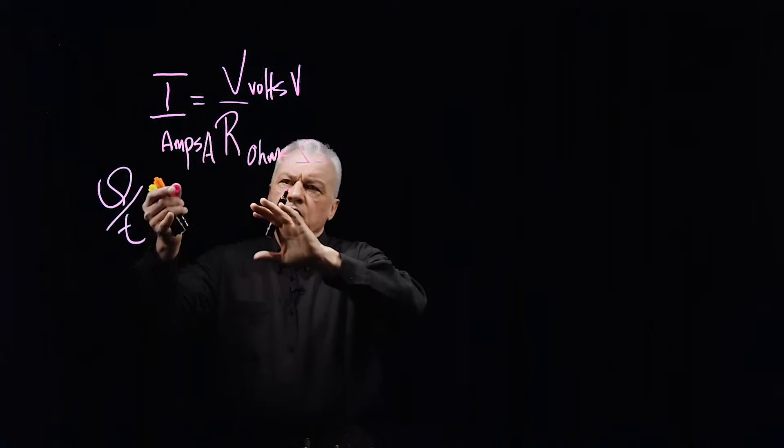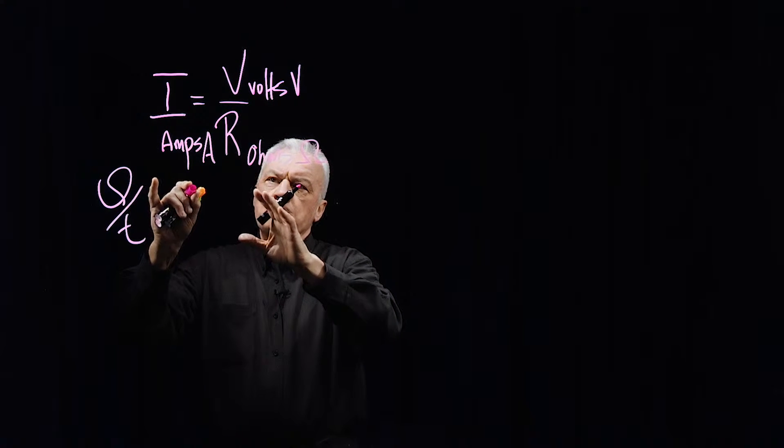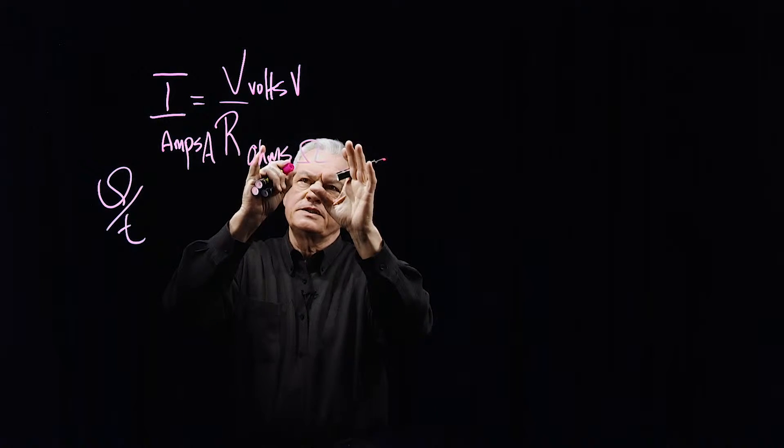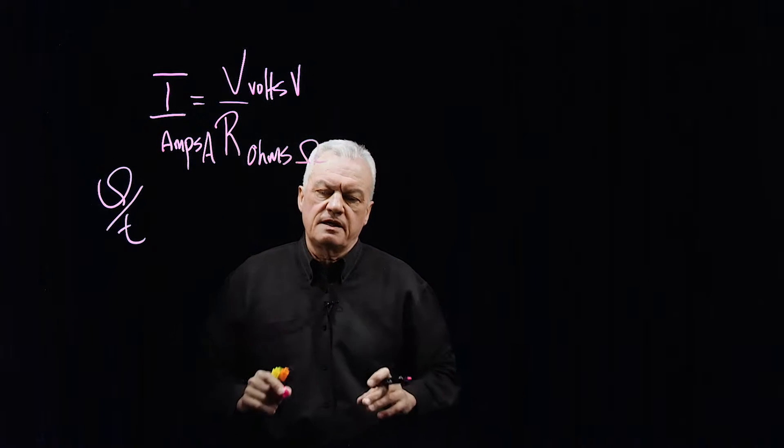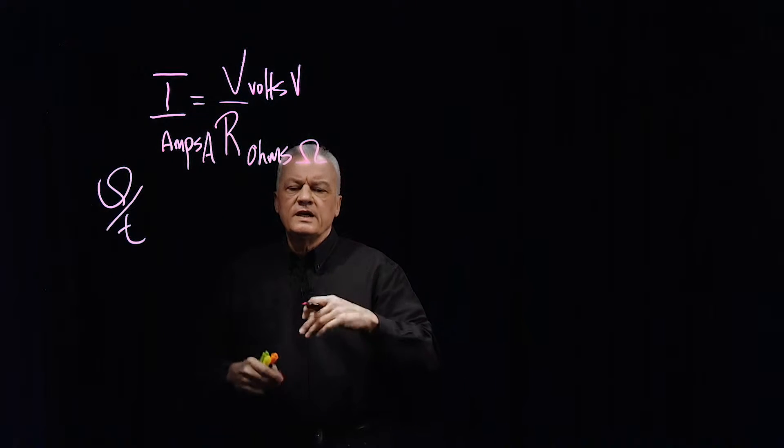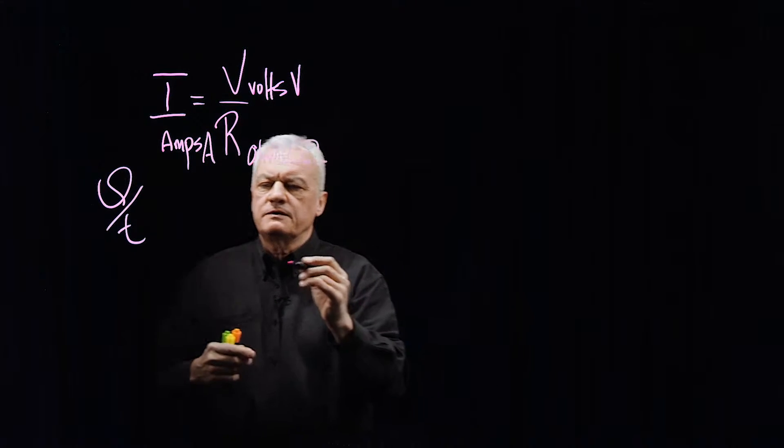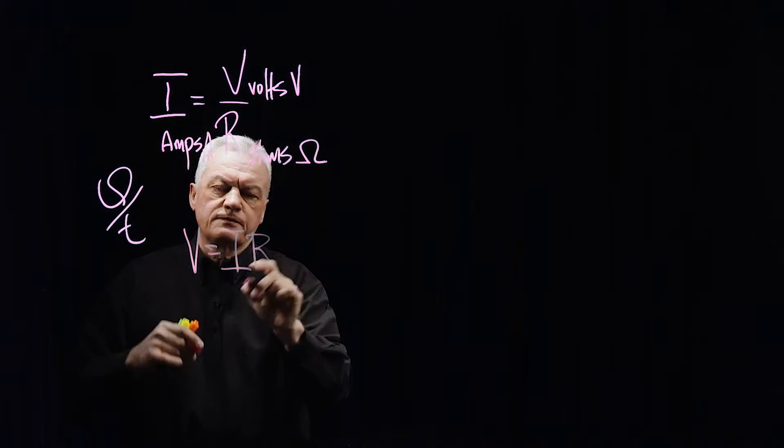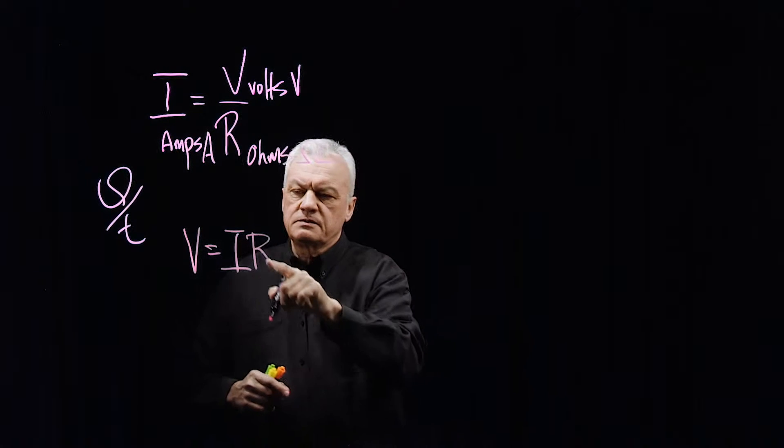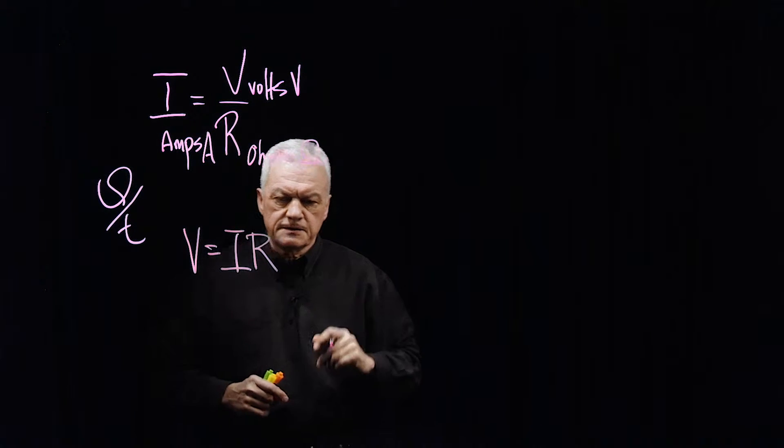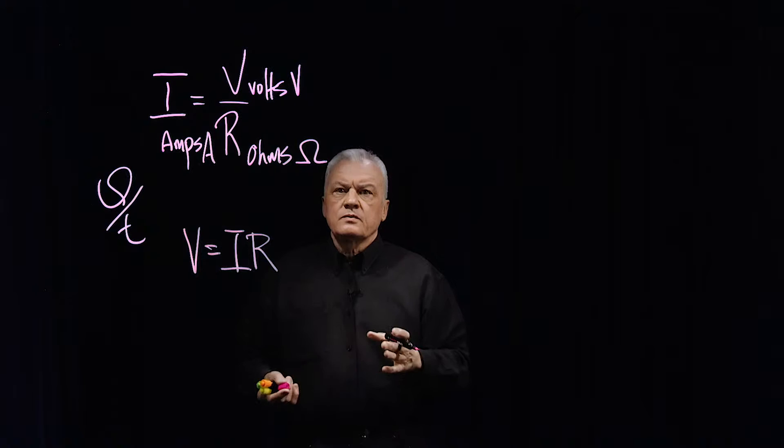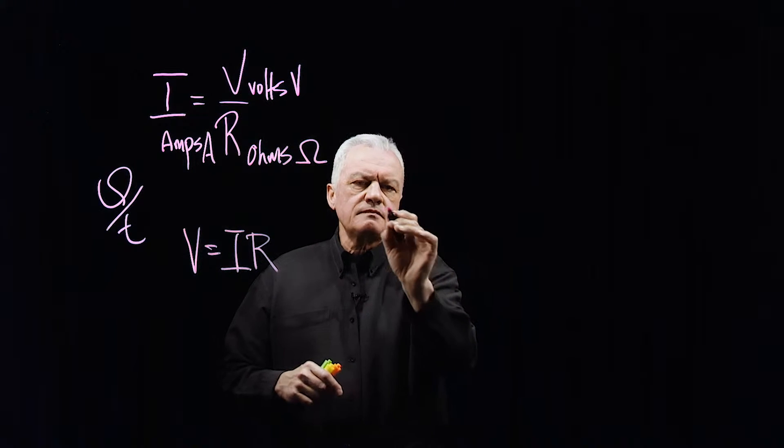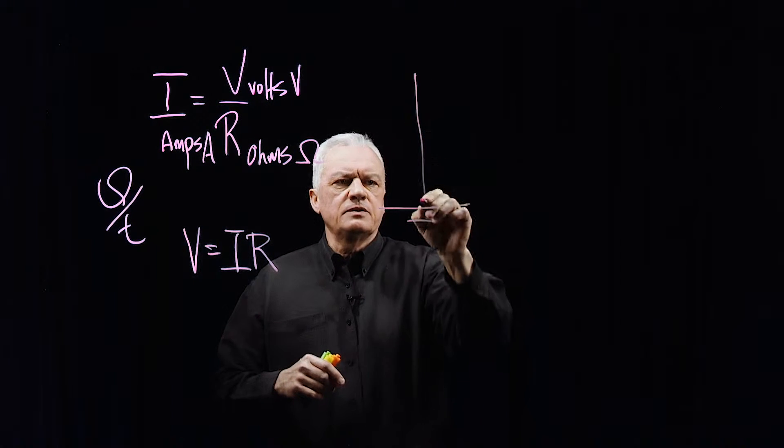He says the current flow is dependent on how much the push is there and how much the pushback is there, which is pretty good. We have taken this forward. You're more comfortable, I think, if you saw the formula written like this: V equals IR. The voltage, the push, is equal to the flow times the resistance. Let's look at a circuit and apply something with Ohm's Law.